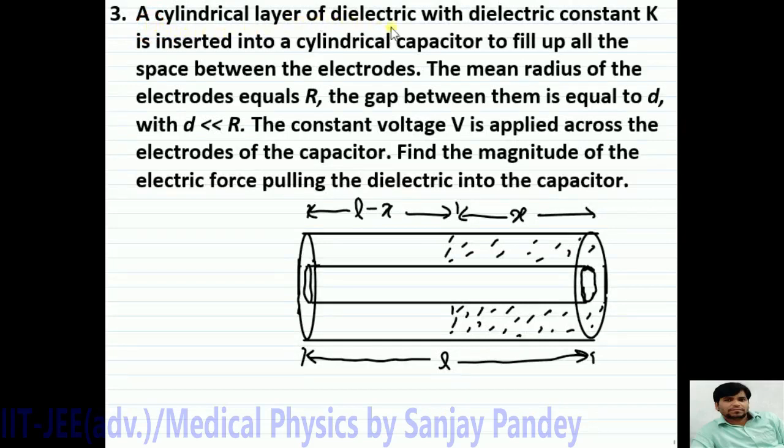A cylindrical layer of dielectric with dielectric constant K is inserted into a cylindrical capacitor to fill up all the space between the electrodes. The mean radius of the electrodes equals R. The gap between them is equal to D, with D very very less than R. The constant voltage V is applied across the electrodes of the capacitor.